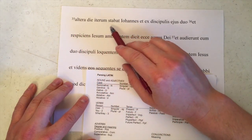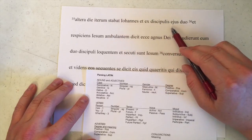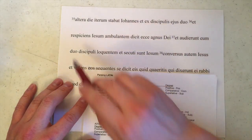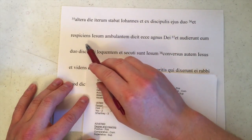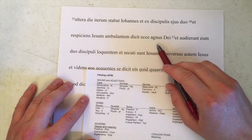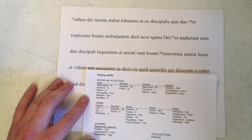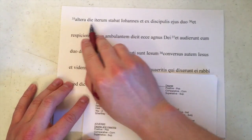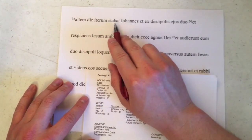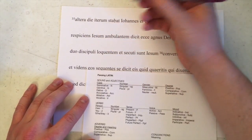Altera die iterum stabat Ioannes, et ex discipulis eius duo, et respiciens Iesum ambulantem dicit ecce agnus Dei. The very first thing we want to find in a sentence when translating from another language into our own is our verb. So taking a look through these, we see that stabat, right there, is our first candidate.